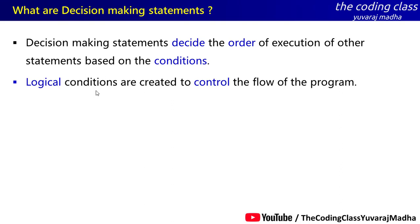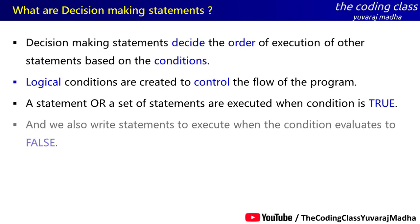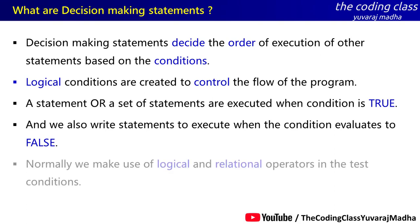We use logical conditions to control the flow of the program — program flow, run order, and control. We use logical operators and relational operators. When the condition is true, we write statements to execute; when the condition evaluates to false, we also write such statements. The boolean condition will be true or false — true will execute some statements, false will execute other statements.